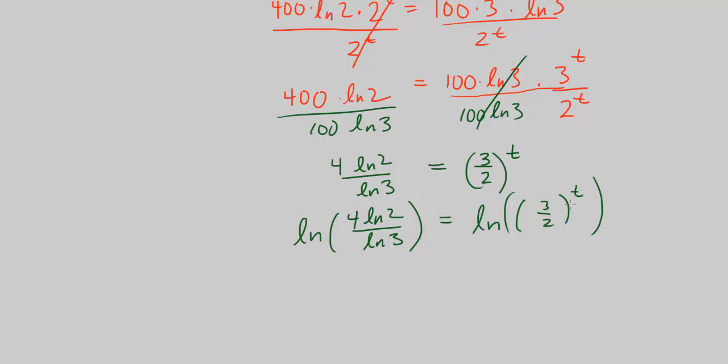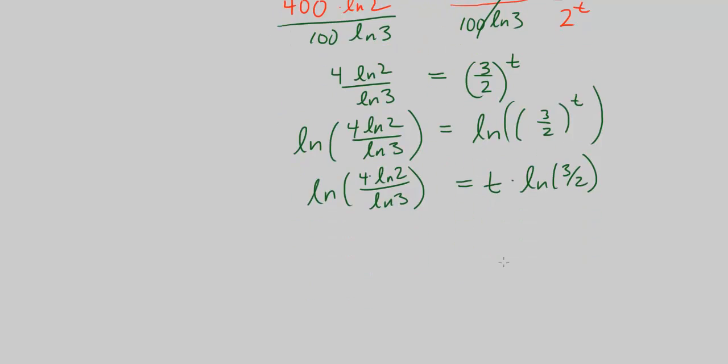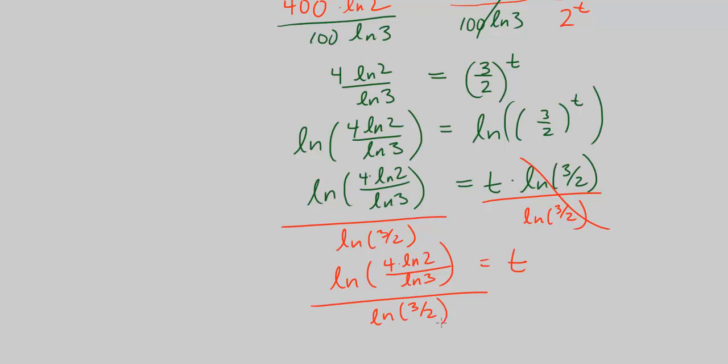So now what we can do is, how do we solve for t? Well we can take the natural log of both sides. So if we take the natural log of this side, we have to do it to this side as well. And then what does that do for us? Well that allows us to bring the exponent down. That's the power law for logs. So this is the same as t times ln of 3 over 2, and that's equal to ln of 4 times ln of 2 over ln of 3. Now we want to go ahead and divide both sides by ln of 3 over 2. So t is equal to ln of 4 times ln of 2 over ln of 3, all divided by ln of 3 over 2.